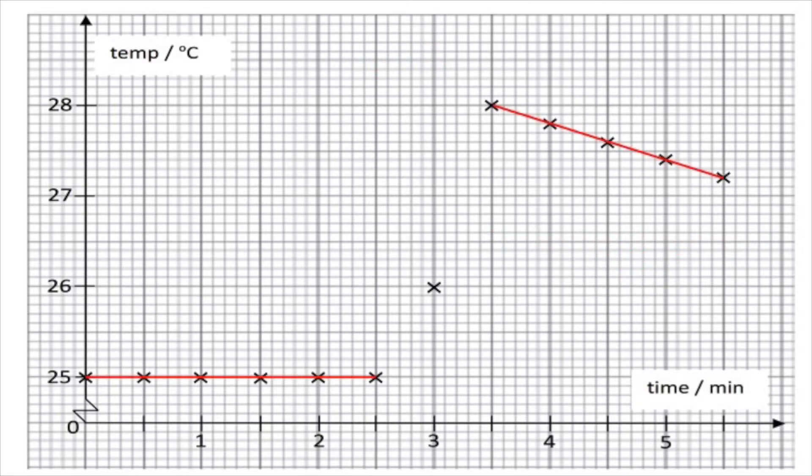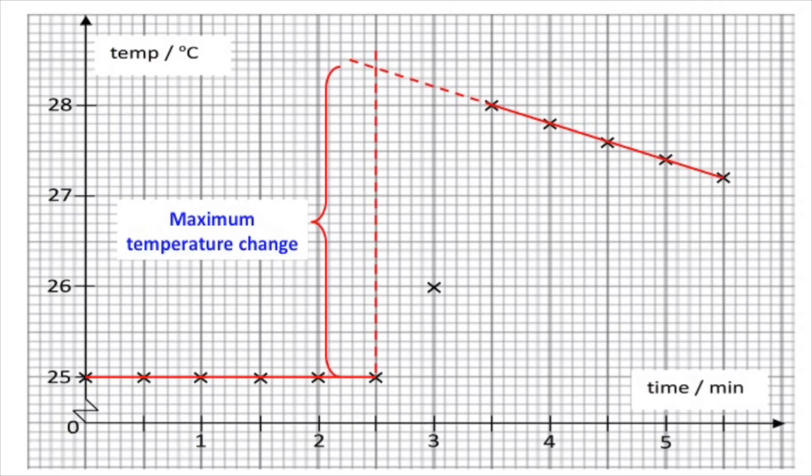So first of all, we use a red line to connect the points. Then we draw a dotted line, extend back to 2.5 minutes. And here we find the intersection between two dotted lines. And that is our maximum temperature change.